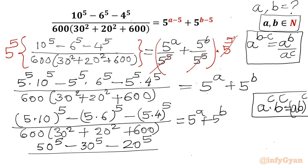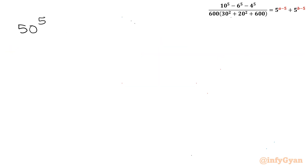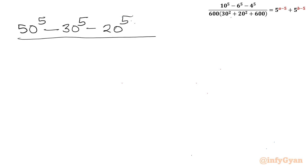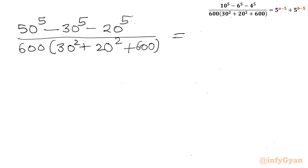So finally we have: (50^5 - 30^5 - 20^5) divided by 600 times (30² + 20² + 600), equal to 5^a + 5^b.